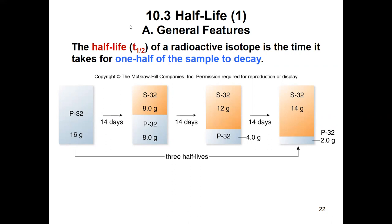Let's go through general features. The half-life — the T of half-life — of a radioactive isotope is the time it takes for one half of the sample to decay, because radioactivity has a life, and so we can measure its half-life.